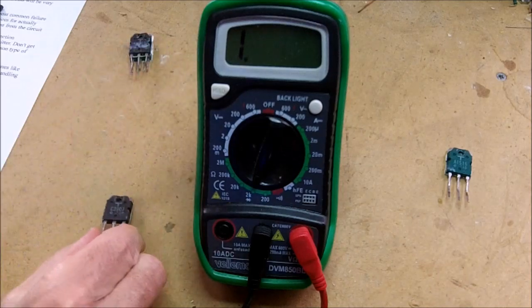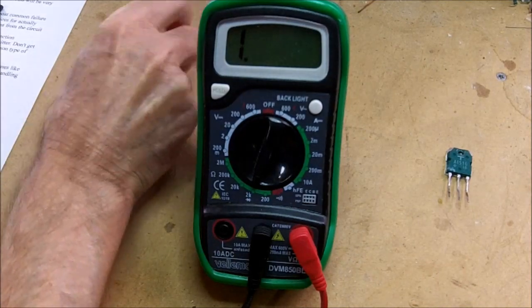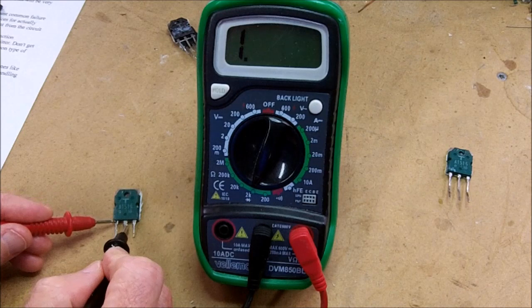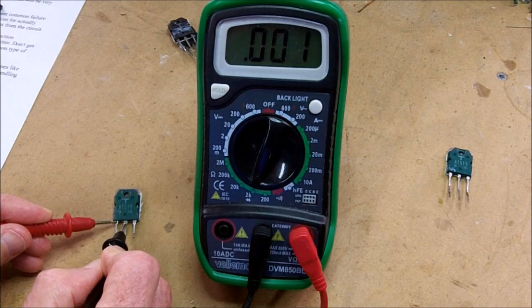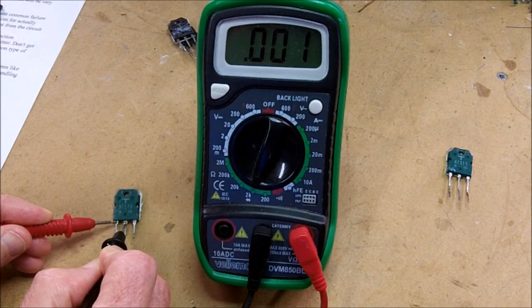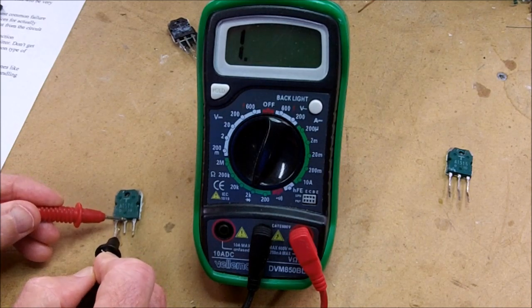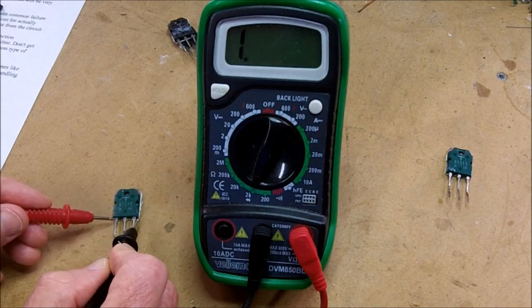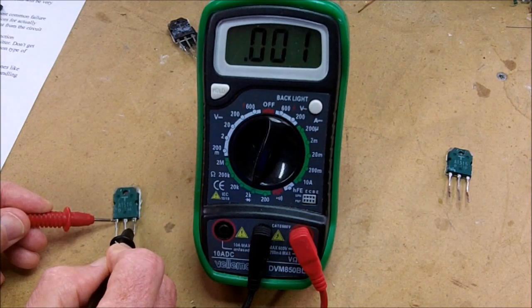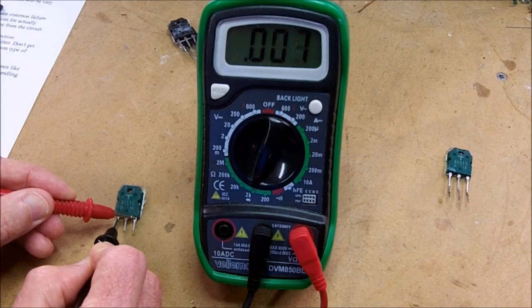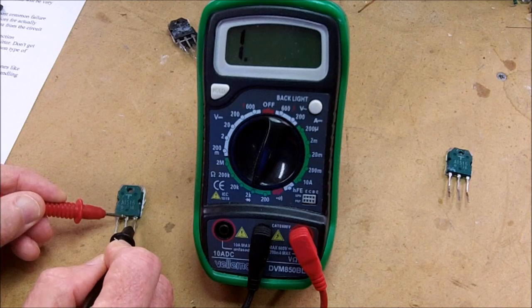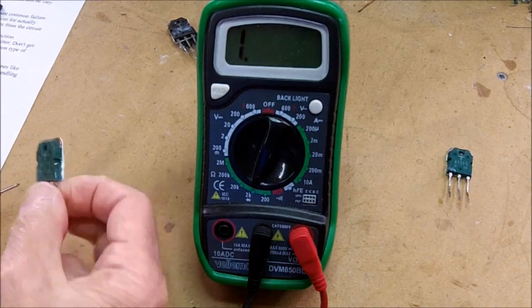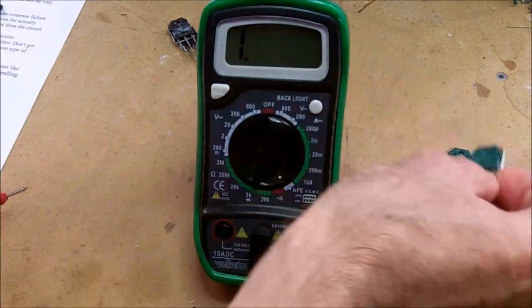Now I'll show you an example of a bad transistor. This is the same type that we just tested, a 2SA1516. We'll test between leads 1 and 2. If you see the reading, it's 0.001. It's essentially a dead short. If we reverse the leads, it's 0.001, a dead short. If we check between 1 and 3, it's 0.001 in both directions. And if we check between 2 and 3, it's also a low resistance. So this transistor is shorted between all the terminals of the device. So we know that one's bad.